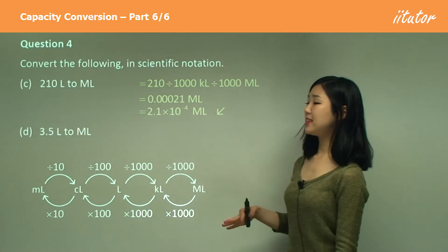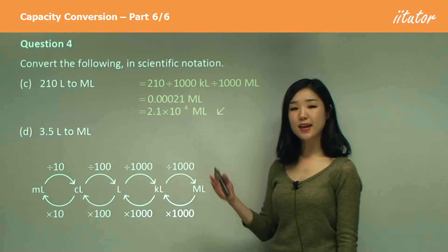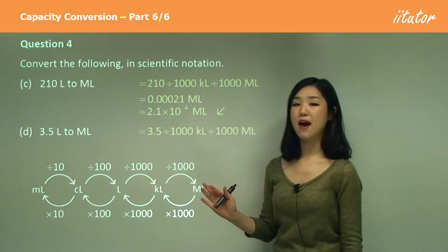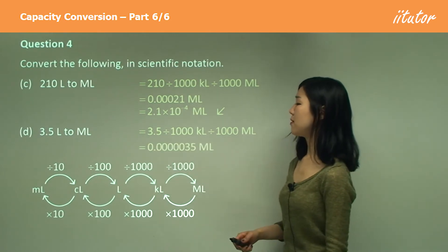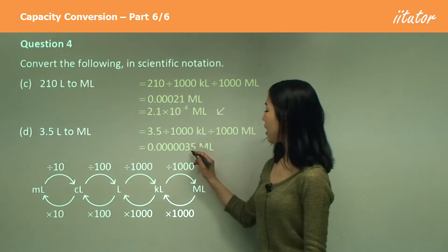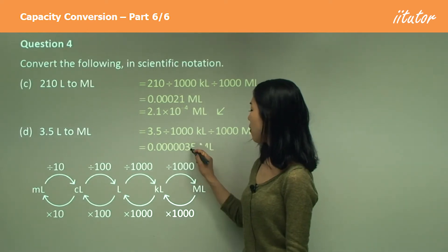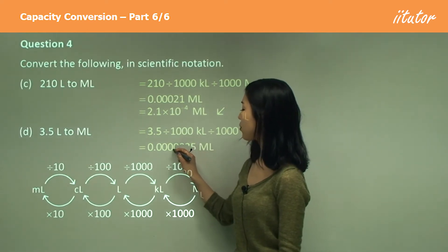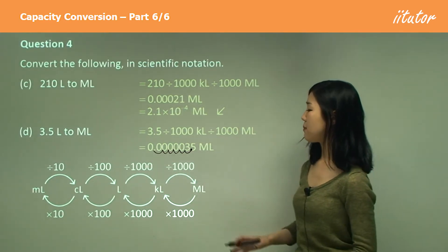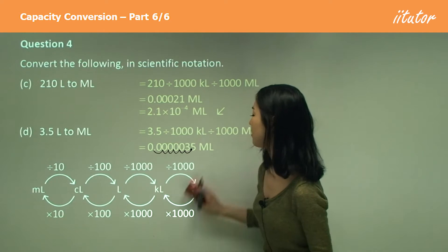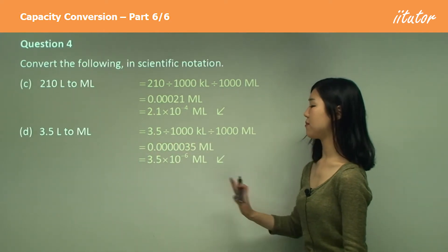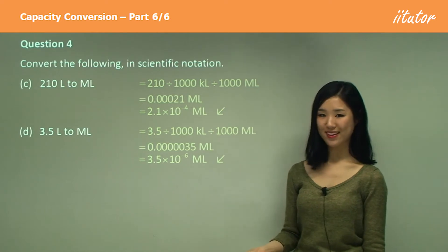D — 3.5 liters to megalitres, same conversion. We're going to divide by a thousand and divide by a thousand again, which gives a lot of zeros. So I put my decimal there and go back six places. So it's going to be 3.5 times 10 to the power of negative 6 megalitres.